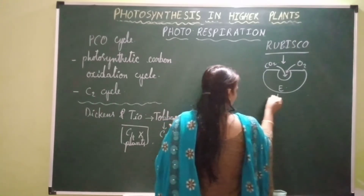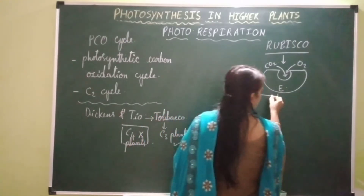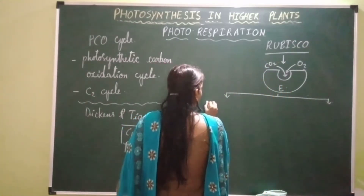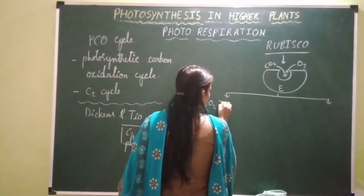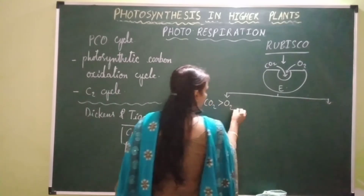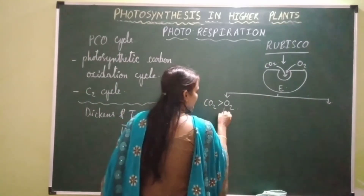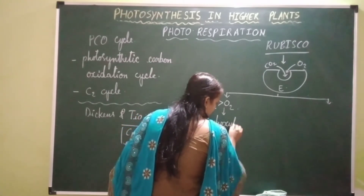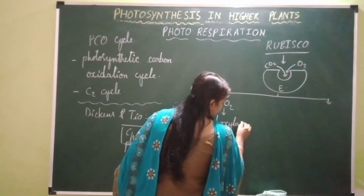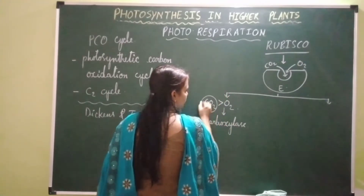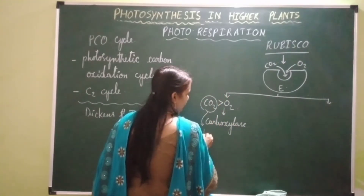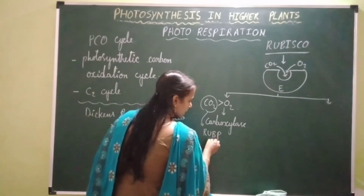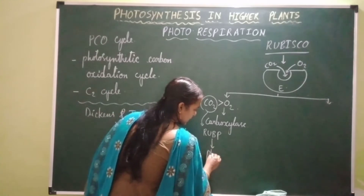When the carbon dioxide concentration is more inside the cell than oxygen, Rubisco functions as carboxylase — meaning it is involved in carboxylation of RuBP, that is fixation of carbon dioxide into RuBP, which leads to the occurrence of photosynthesis inside the plant.